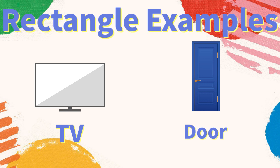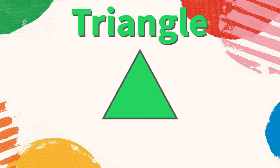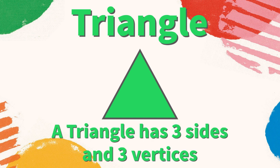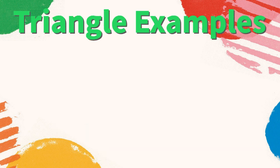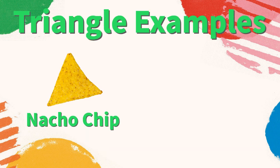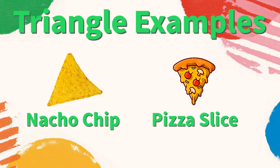Triangle: a triangle has three sides and three vertices. What are some examples of triangles? A nacho chip is a triangle, a slice of pizza is also a triangle. What other triangle examples can you think of?